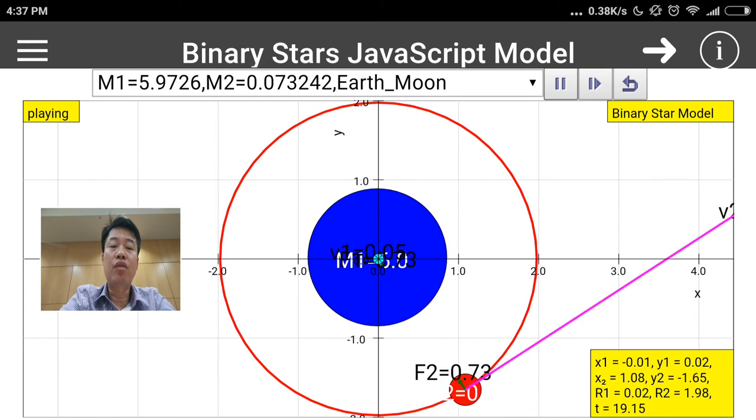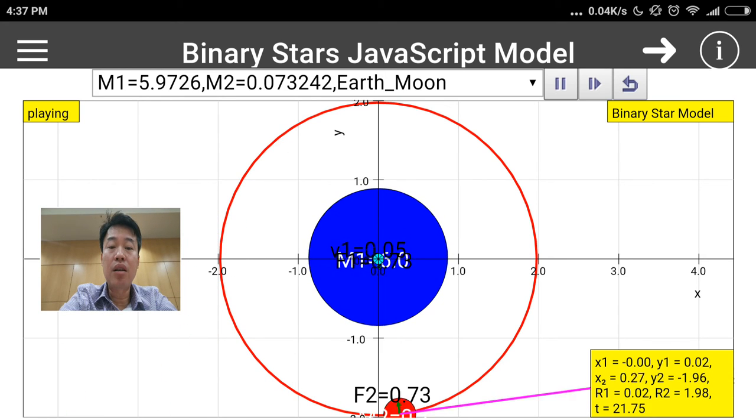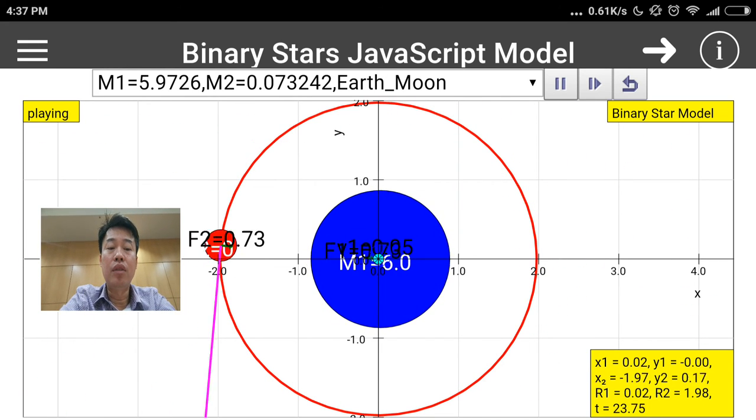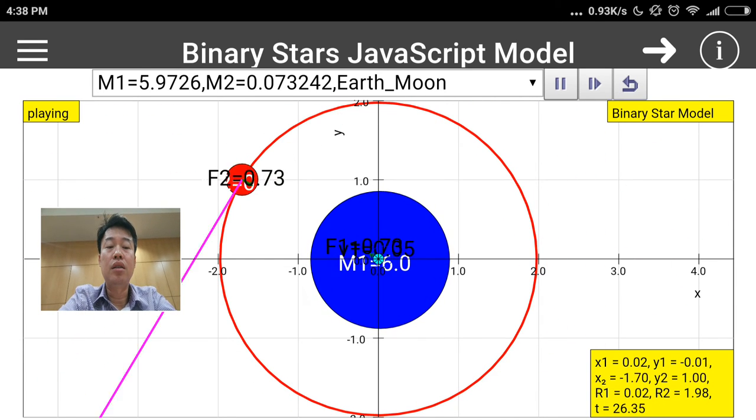If you add the mass of the Earth and the mass of the Moon together, there should be some center of mass somewhere along the point which is indicated as the teal color circle.